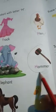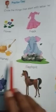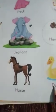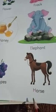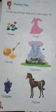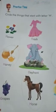There are two words starting with H, so we will circle both. Here is H for horse, this is D for duck, and this is for grapes. Circle the H for horse. After this, click a photo of your book and send it to your group.